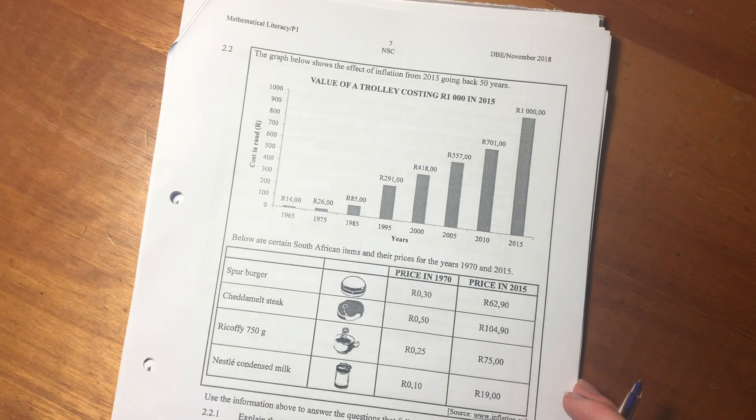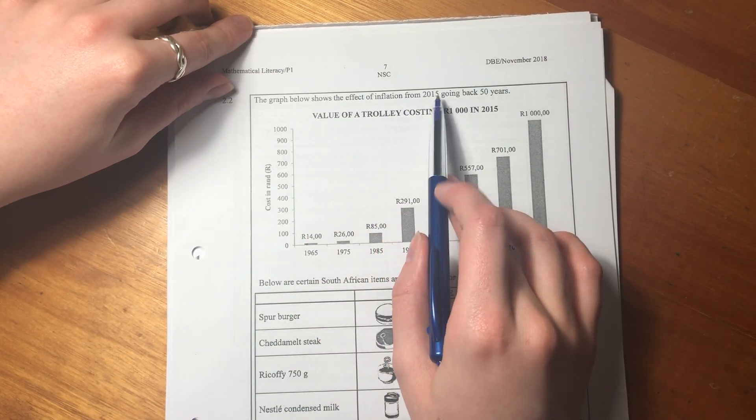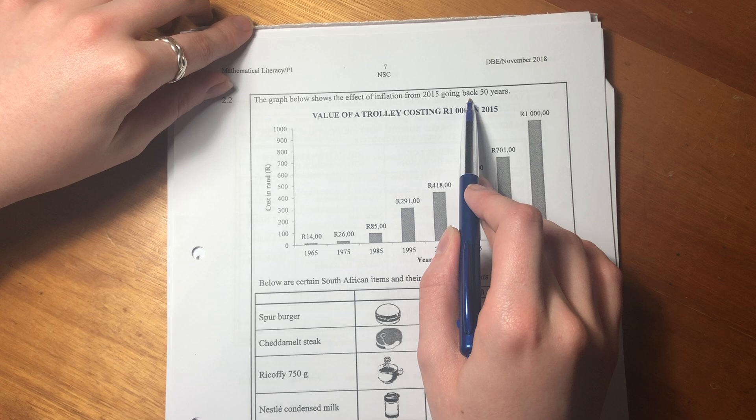Okay guys, we are moving on to 2.2. So 2.2 says the graph below shows the effect of inflation from 2015 going back 50 years.